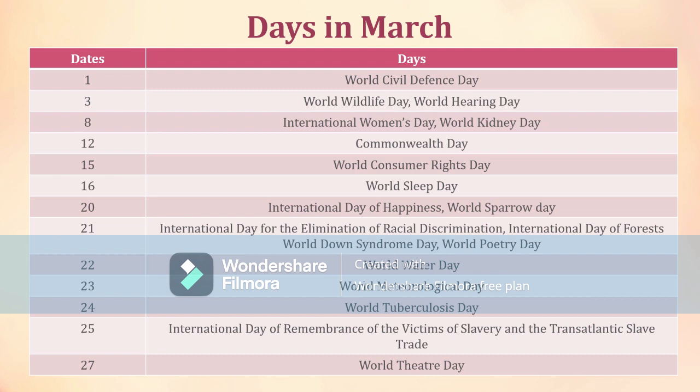March 21st: International Day for the Elimination of Racial Discrimination, International Day of Forests, World Down Syndrome Day, and World Poetry Day. March 22nd: World Water Day. March 23rd: World Meteorological Day. March 24th: World Juventus Day and International Day of Remembrance of the Victims of Slavery and the Trans-Atlantic Slave Trade. March 27th: World Theater Day.